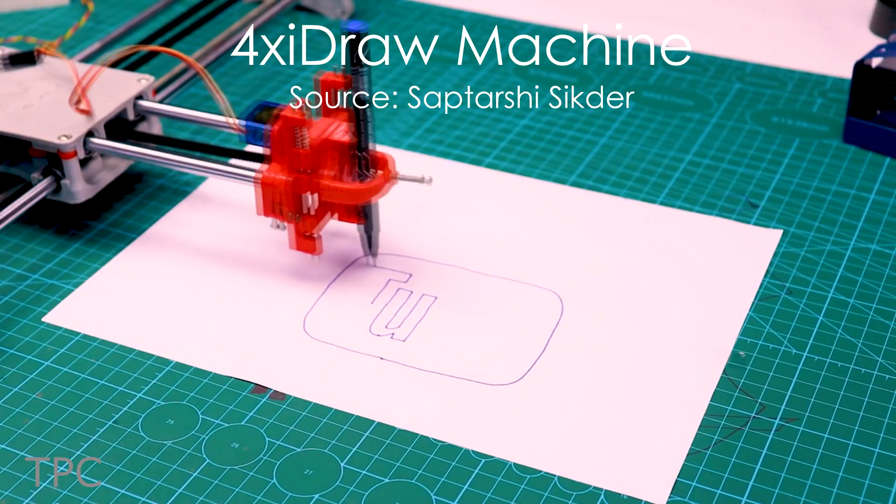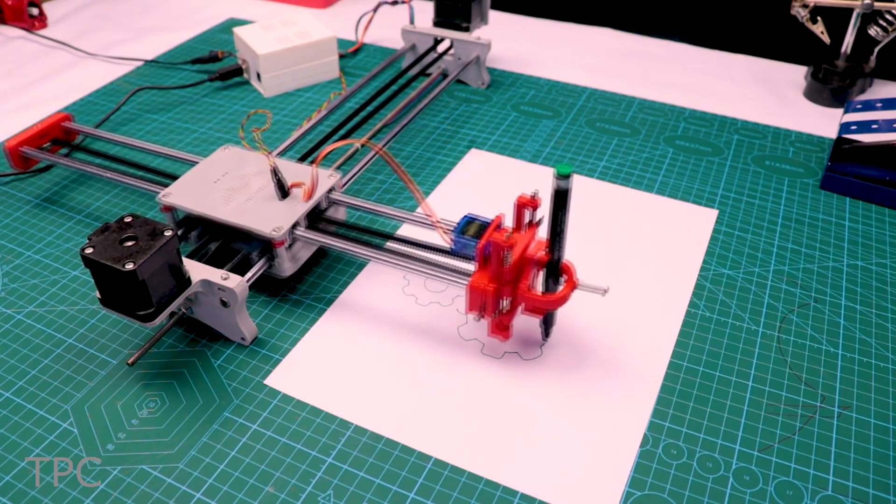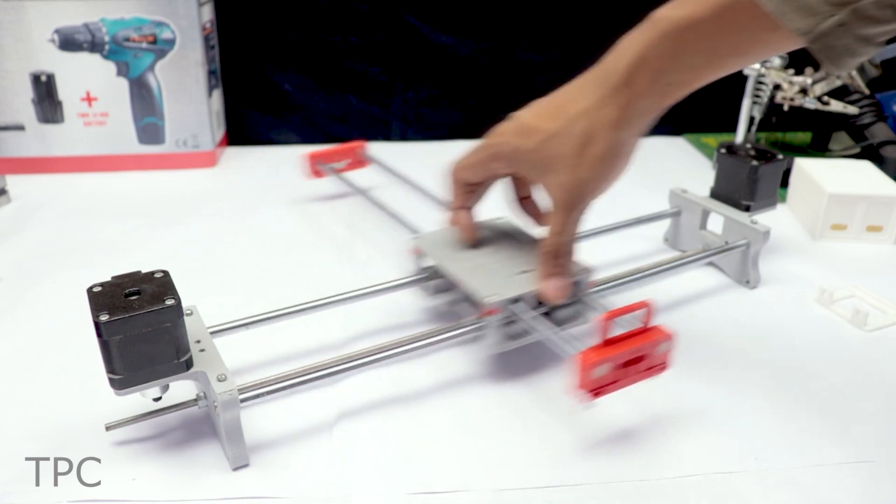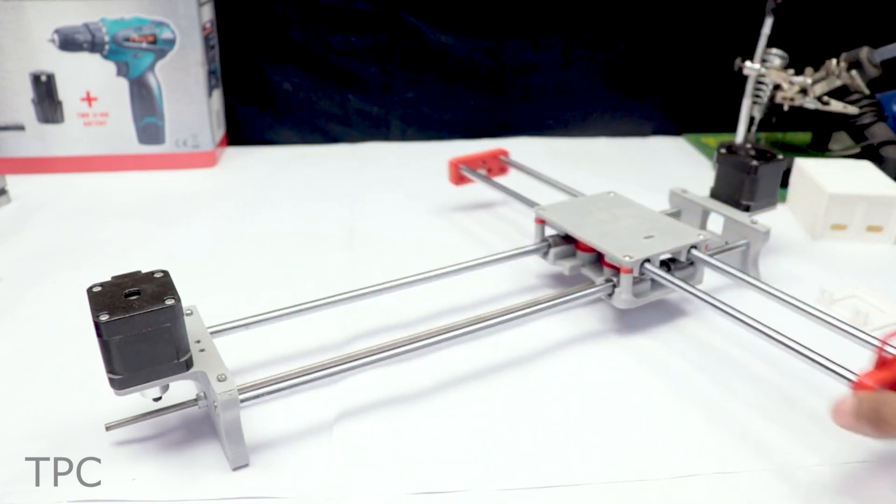This CNC machine features a writing head that extends beyond the machine, making it possible to draw on objects bigger than the machine itself. The biggest advantage is that it can be placed over a book because of the core XY extension.